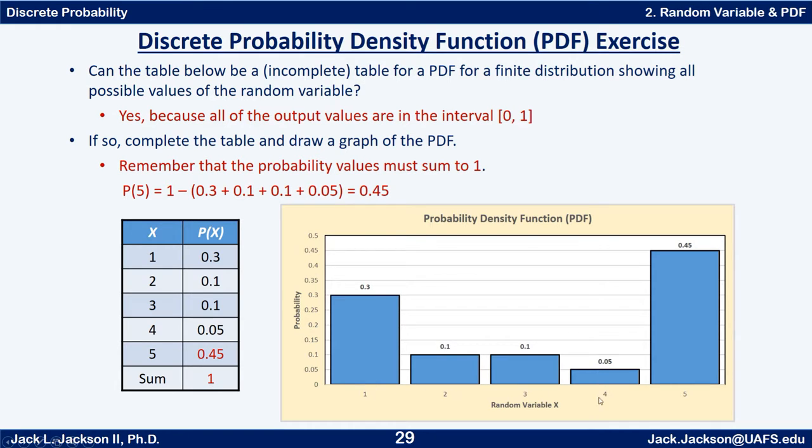We can graph it: 1, 2, 3, 4, 5 here, and then the heights of the bars are given. Sometimes we can actually write the numbers up here. Essentially, we've got the whole table here as well as a visual representation of the PDF, the probability density function.